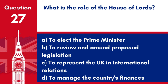Question 27. What is the role of the House of Lords? A. To elect the Prime Minister. B. To review and amend proposed legislation. C. To represent the UK in international relations. D. To manage the country's finances. Answer: B. To review and amend proposed legislation. The House of Lords reviews and amends legislation proposed by the House of Commons.